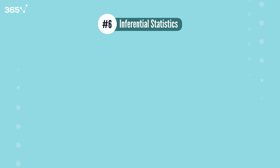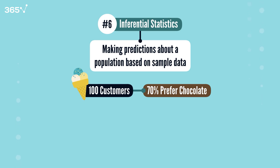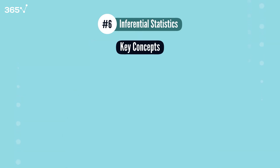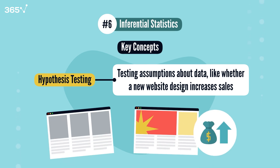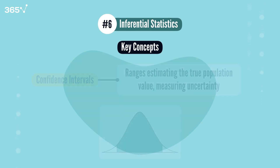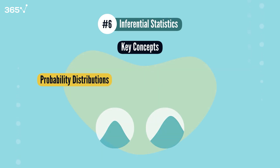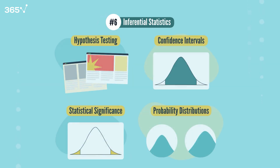Concept 6: Inferential Statistics. Inferential statistics allows us to make predictions about a population based on sample data. For instance, if a survey of 100 ice cream shop customers shows 70% prefer chocolate, we can predict this preference likely applies to all their customers — helping businesses make decisions without surveying everyone. Key concepts include hypothesis testing (testing assumptions like whether a new website design increases sales), confidence intervals (ranges that likely contain the true population value), statistical significance (determining if results are meaningful or just random chance), and probability distributions (models showing how data values are spread, essential for predictions).